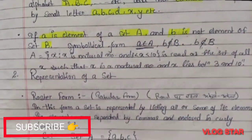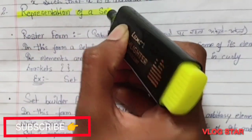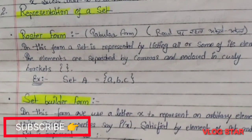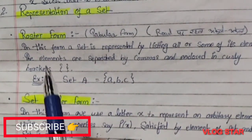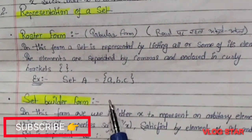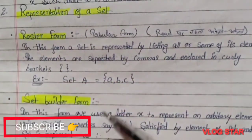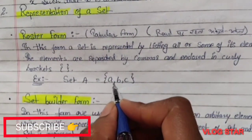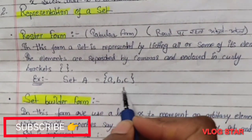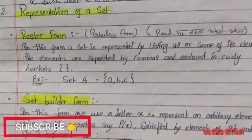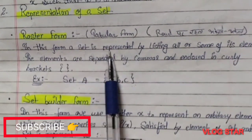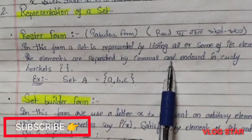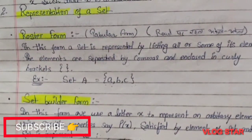Sets can be represented in two ways: Roster Form and Set Builder Form. A trick to remember Roster Form — think of a road where people walk separately one by one. In roster form, elements are separated by commas and enclosed in curly brackets. As stated: in this form, a set is represented by listing all or some of its elements, separated by commas and enclosed in curly brackets.